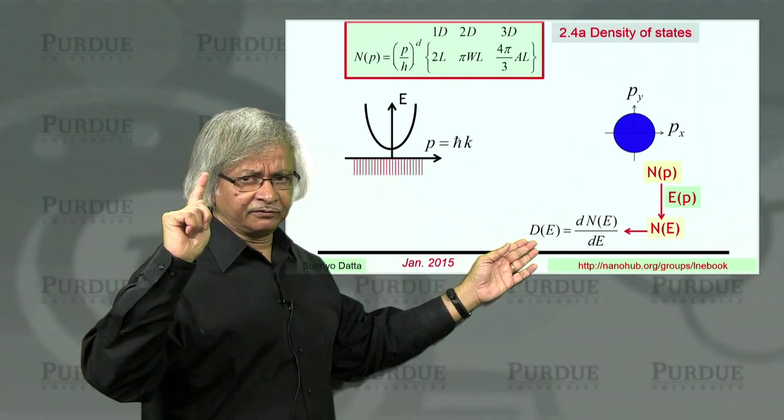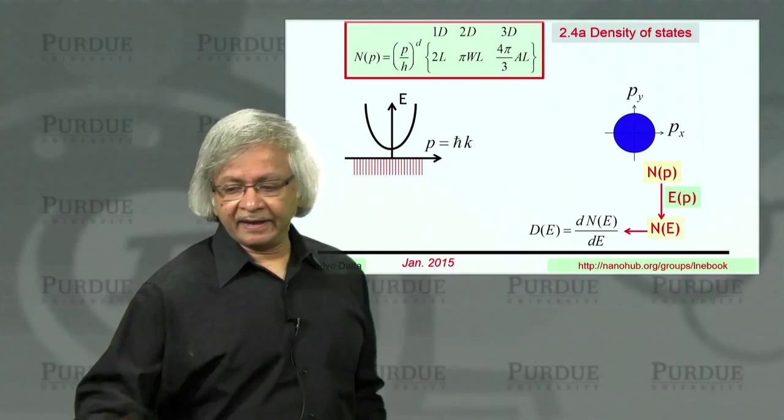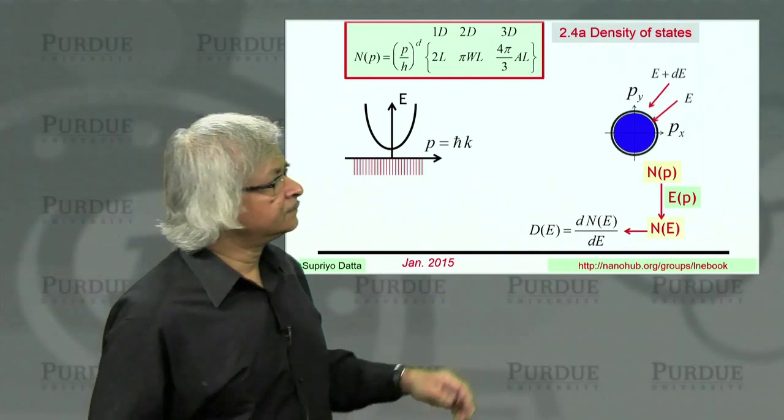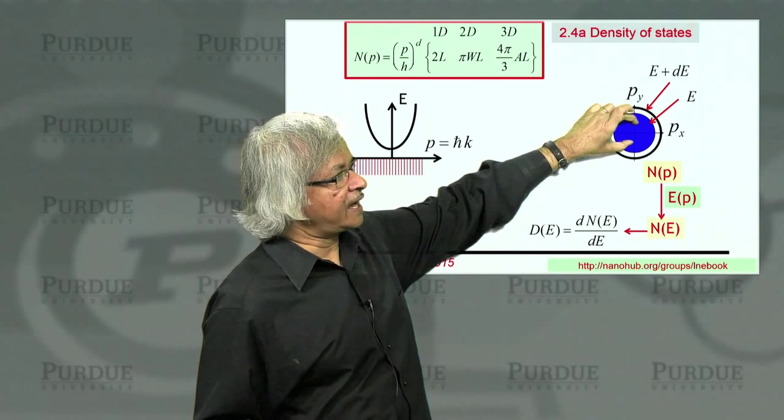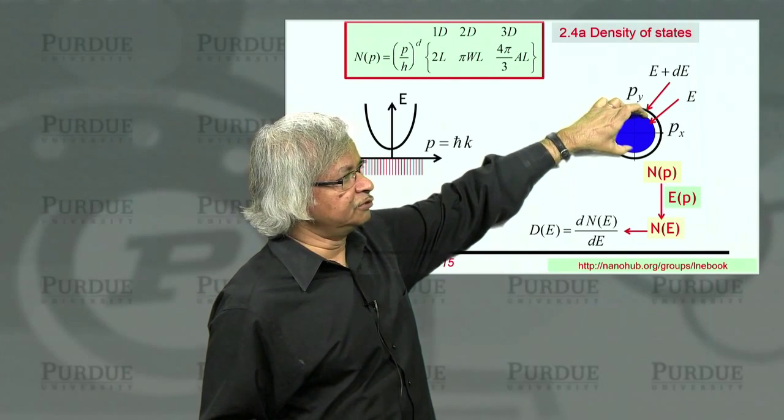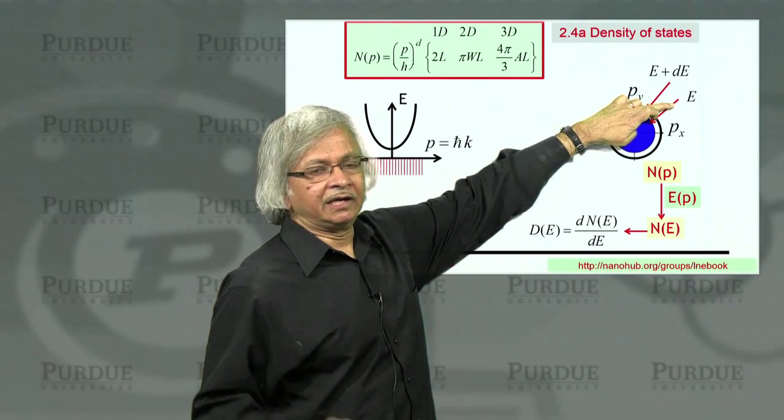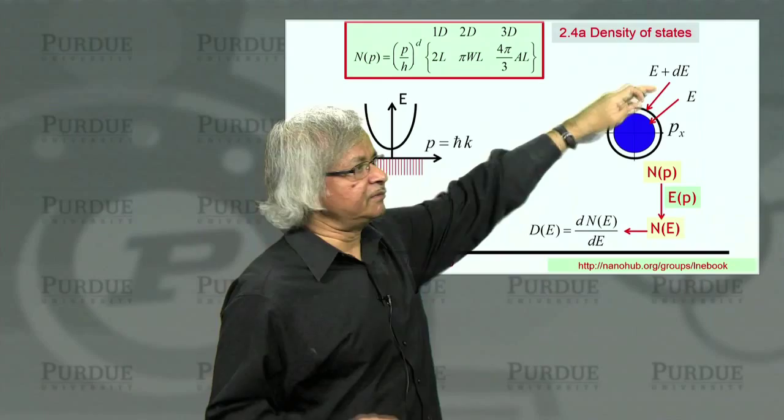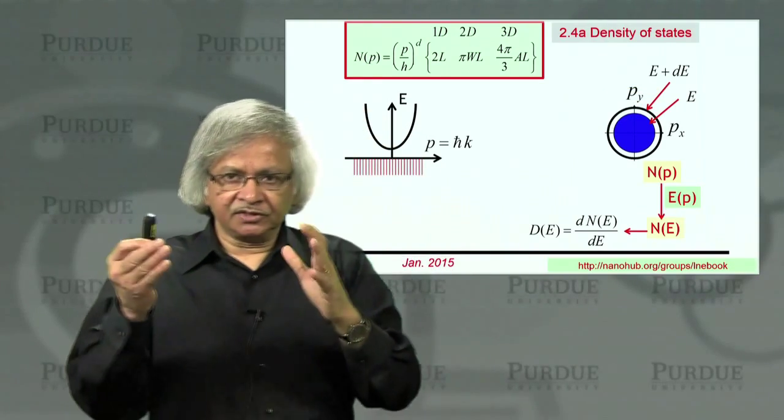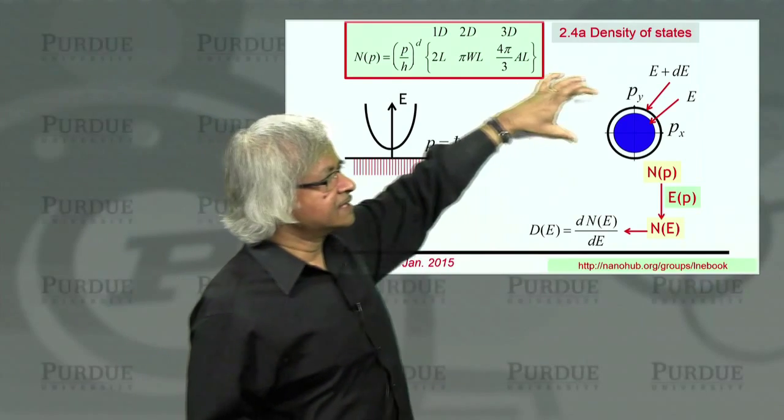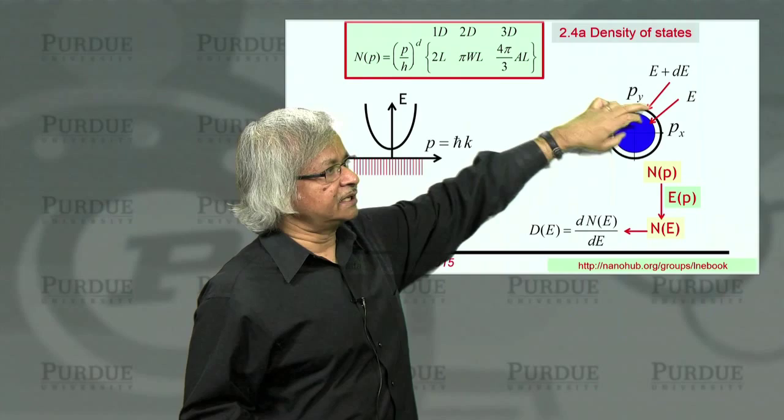The way you should think about this is: N of E tells us how many states we have in this blue region, assuming that the blue region corresponds to a certain value E. Now let's increase E a little bit, from E to E plus dE. Correspondingly, the momentum increased a little bit so we have a slightly bigger circle.